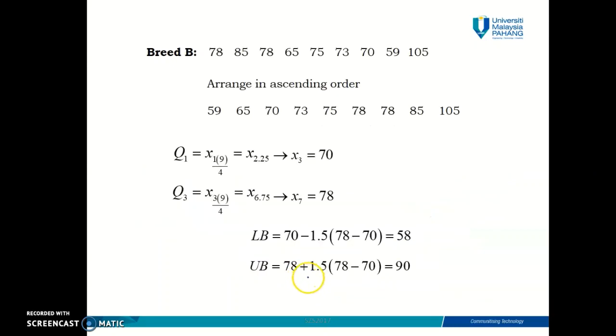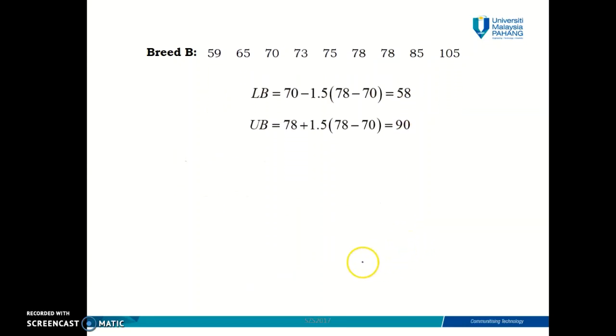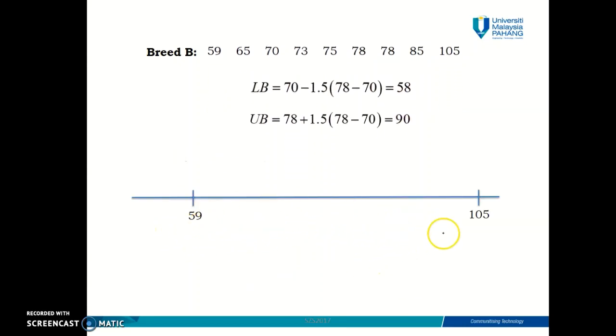Okay, so let's move on to the second set, which is breed B. Again, you need to arrange in ascending order and then calculate Q1, calculate Q3, and then determine the lower and upper boundary using the formula given. And using a number line, you can understand the position of your lower and upper boundary among your data value. Okay, so this is your lower boundary, 58, which is smaller than your minimum value. And the upper boundary, which is 90, is actually smaller than your maximum data value here.